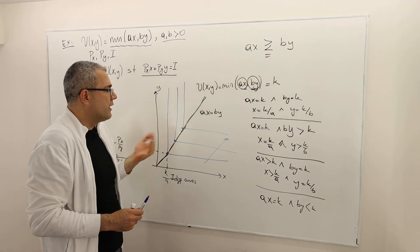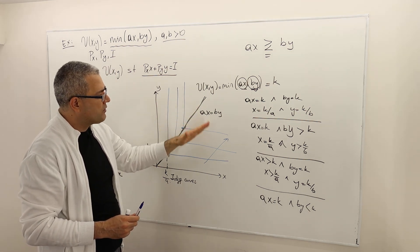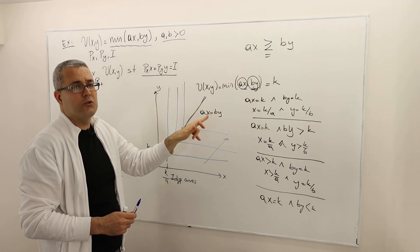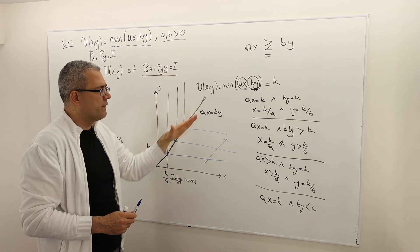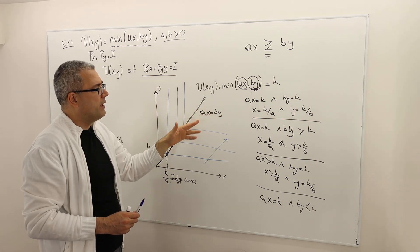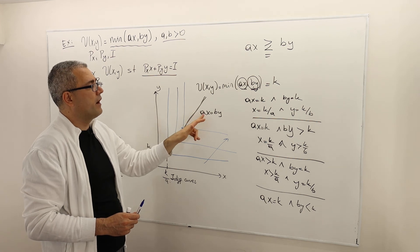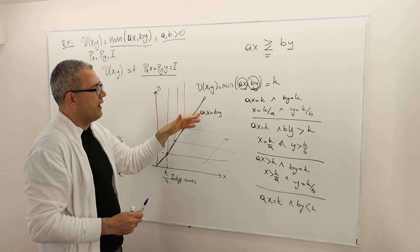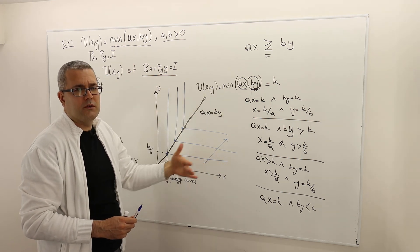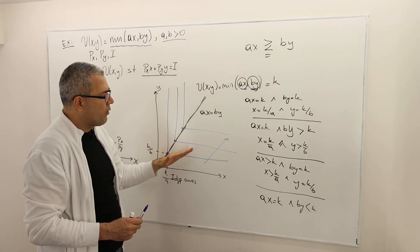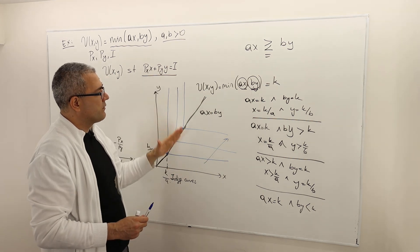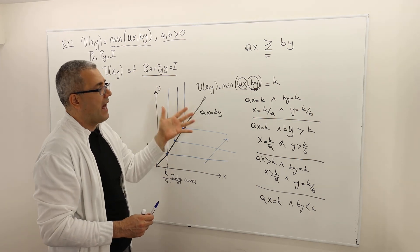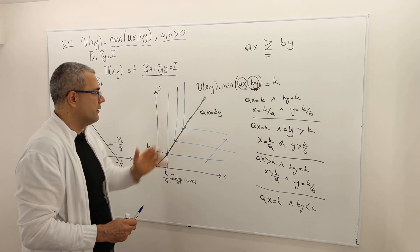Well, so therefore, depending on how steep this AX equals BY line, for example, if A is equal to B, well, that's X is equal to Y, so 45 degree line. Or maybe if A is greater than B, like, for example, 5X is equal to Y, well, it's going to be very steep. If A is less than B, it's going to be more horizontal. You see what I mean? So the kink points are going to move either in this or in this or in this region. But the thing is, the idea is that all these L curves are going to be parallel to each other.